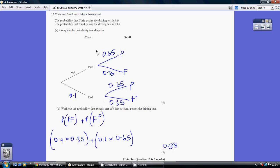us the option of considering Chris and Sunhill together, whether Chris passes or fails. Now, work out the probability that exactly one of Chris or Sunhill passes the driving test. So one of them passes,